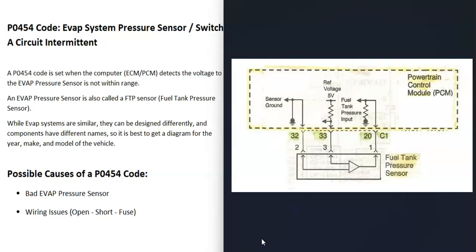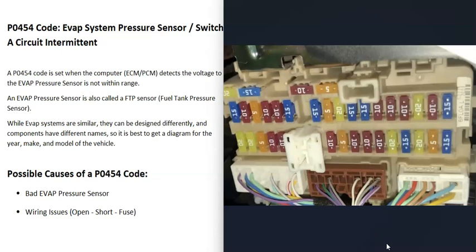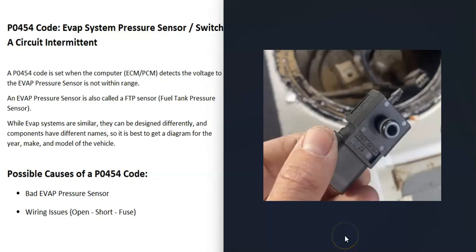Once you find the fuel tank pressure sensor and have wiring schematics, you can test it — check that you're getting voltage, that you have a good ground, and that there are no opens or shorts. It's also a good idea to check your fuses, which can be confusing since in the EVAP system they're often combined with other components. Good schematics will tell you which fuse to check.